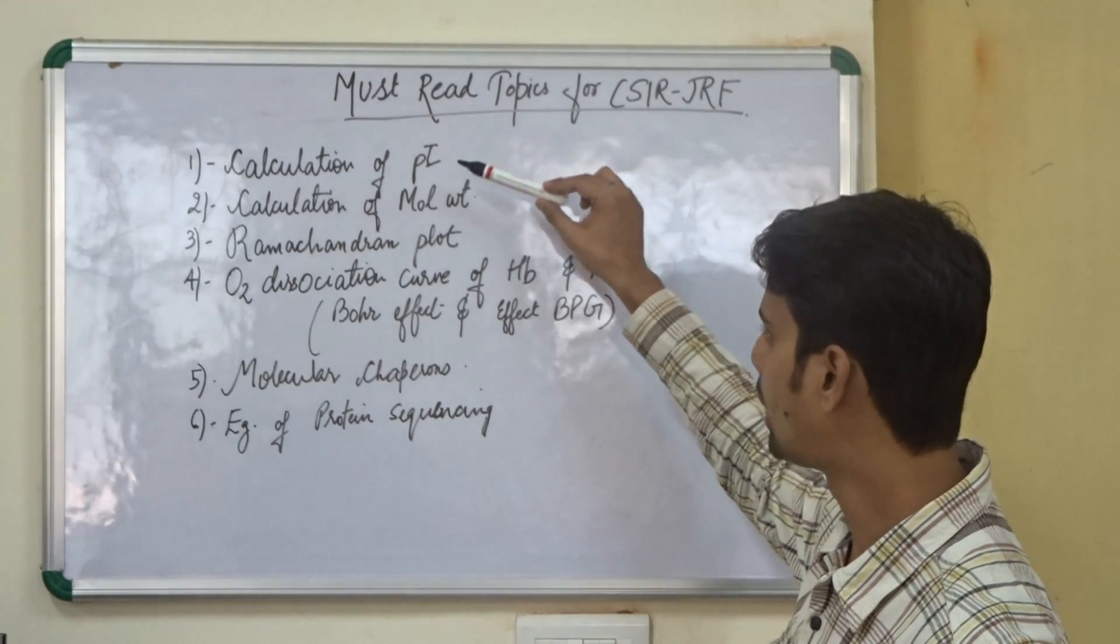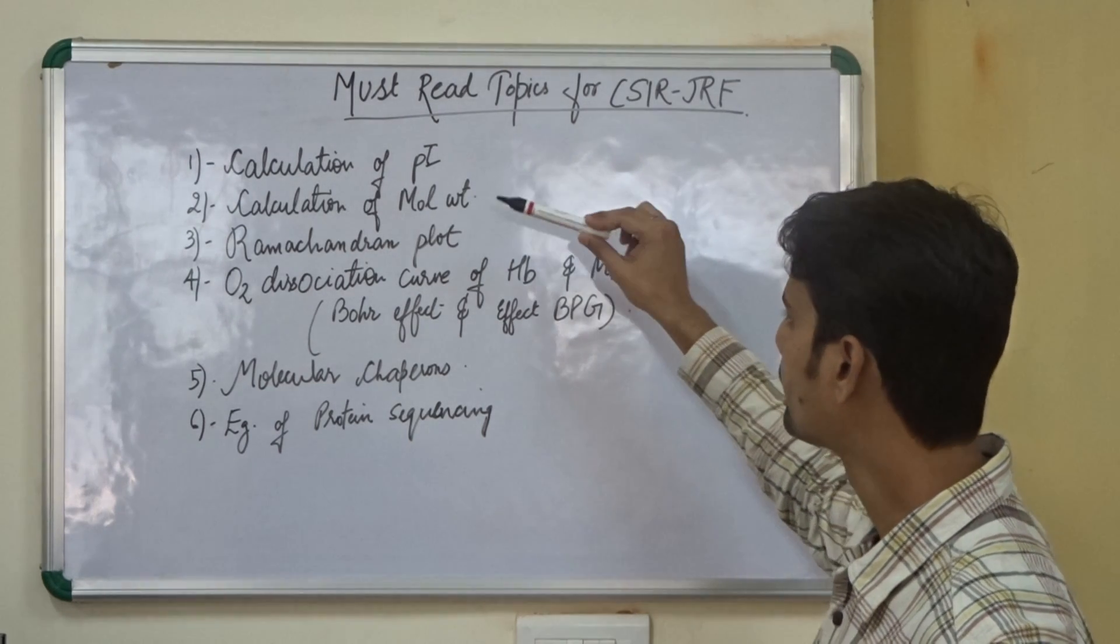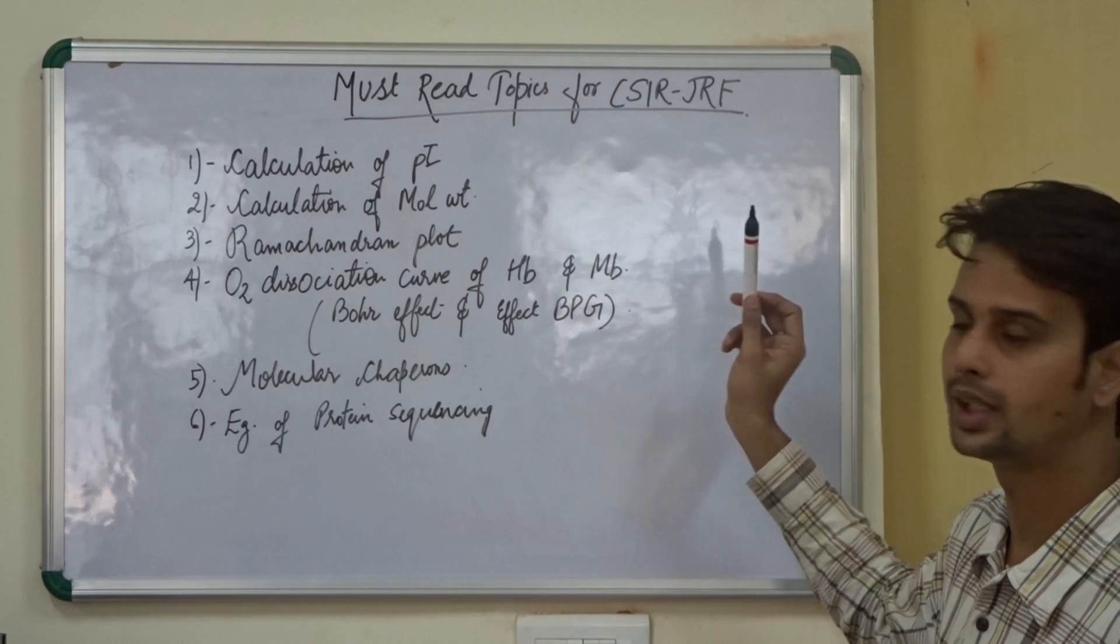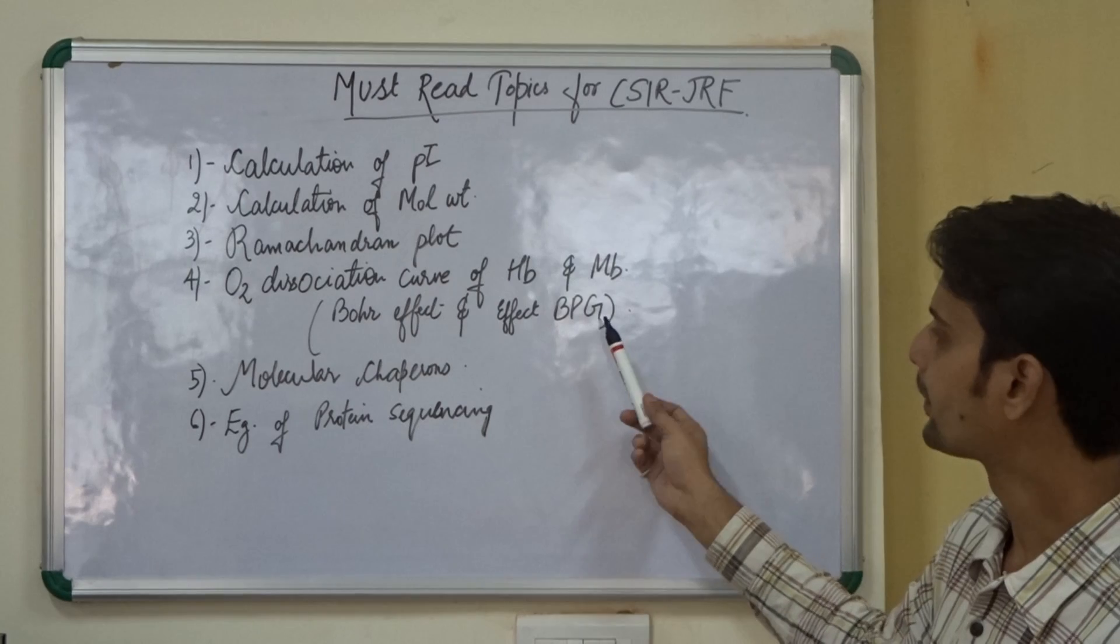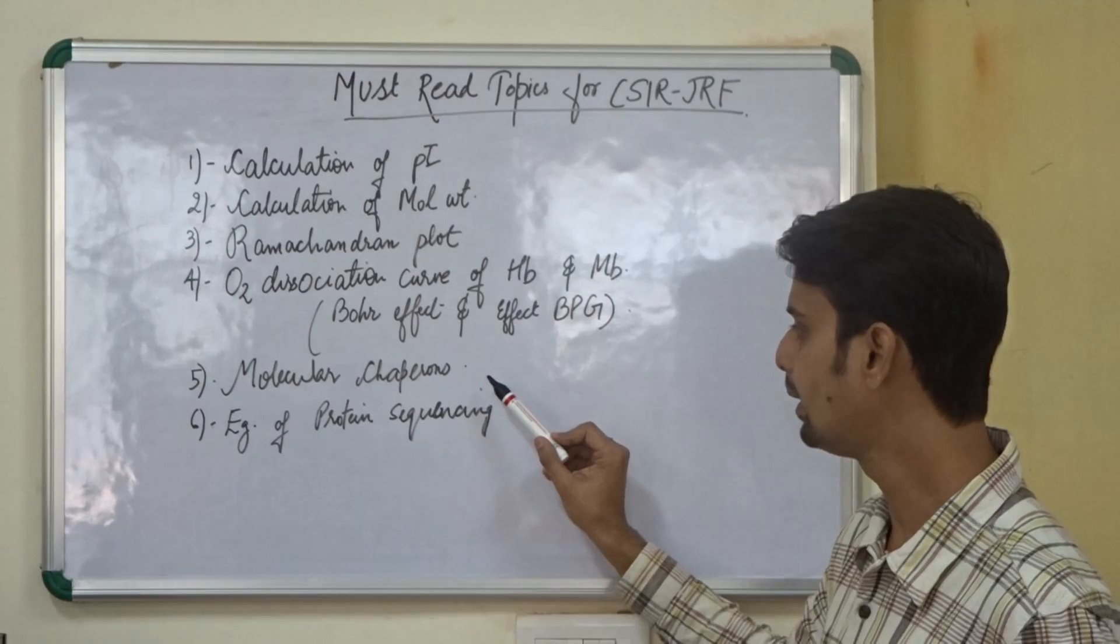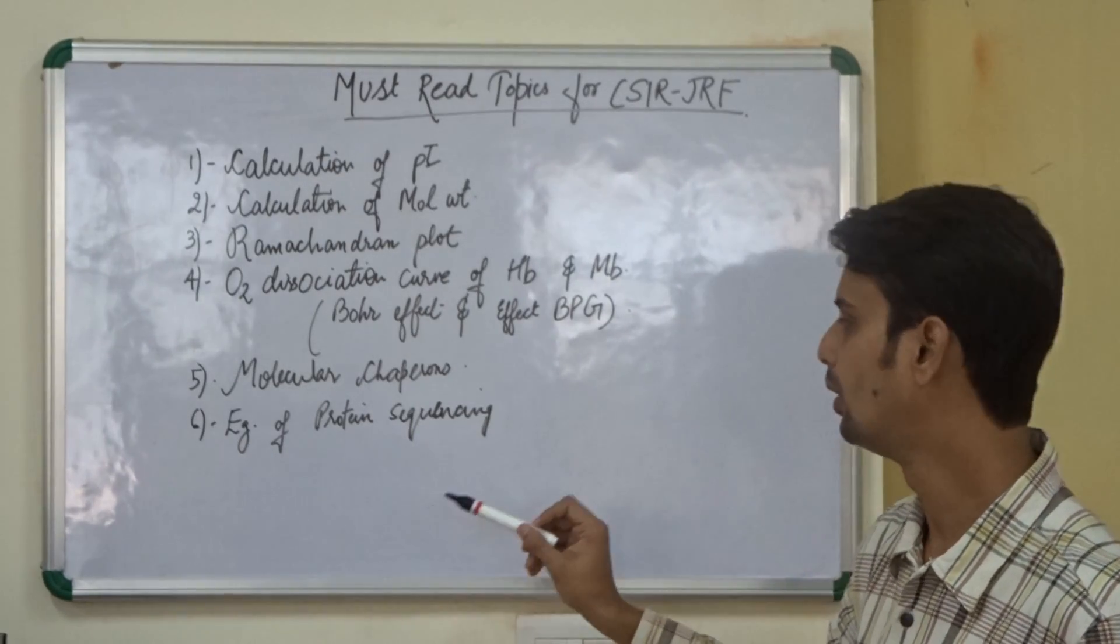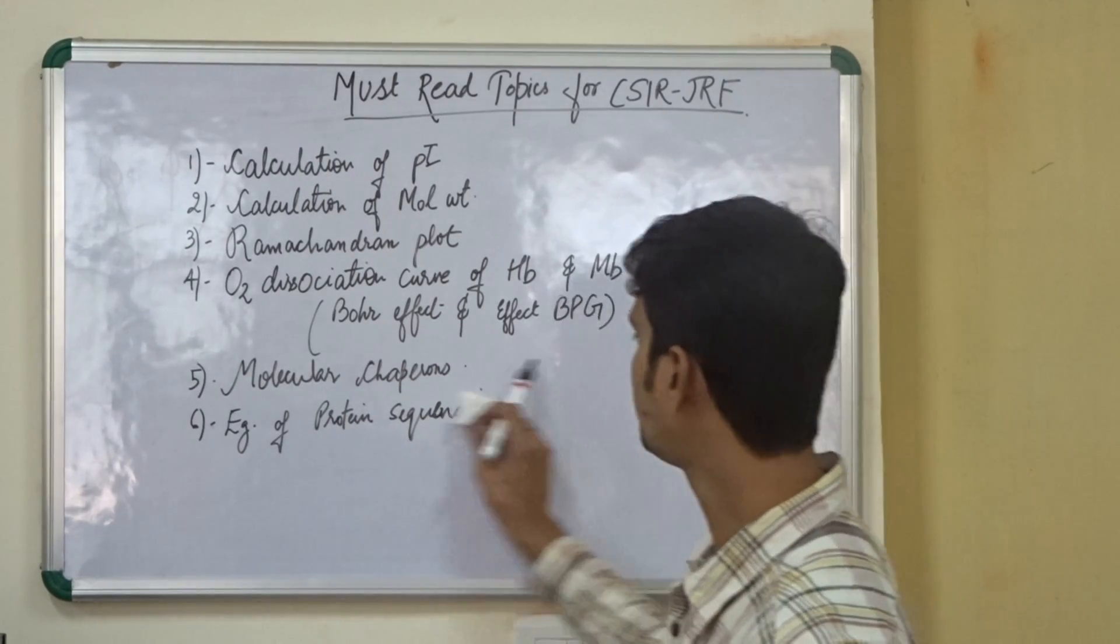We need to know how to calculate the PI value, how to calculate the molecular weight of the given peptide, how to read and know about the values of Ramachandran plot, the oxygen dissociation curve of hemoglobin as well as myoglobin. In them, we need to know about the Bohr effect and effect of BPG. We also need to know about the molecular chaperones, how they assist in folding. And lastly, we need to know about the protein sequencing and the examples such as Edman degradation. This is the first, the topics of first part.